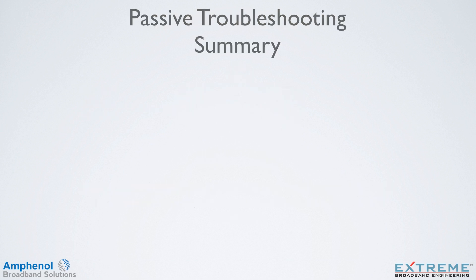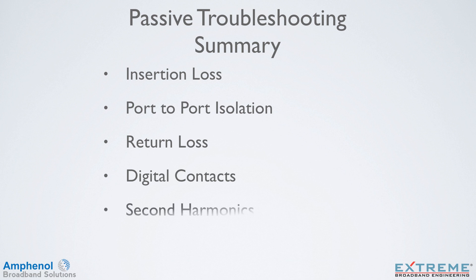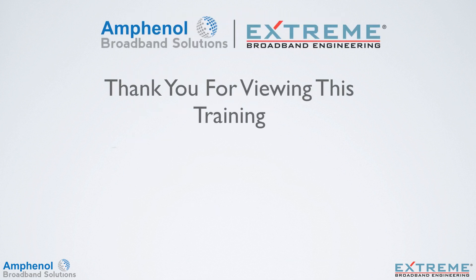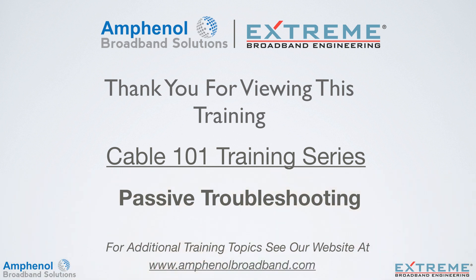In this video, we looked at how to troubleshoot insertion loss and how it's a flat loss, and the same in the downstream and upstream. We looked at port-to-port isolation, return loss and the importance of termination, digital contacts and common path distortion, and finally second harmonics and the importance of using passives with high-quality ferrite material. Thank you for viewing this training on passive troubleshooting. For additional training topics, see our website at www.amphenolbroadband.com.